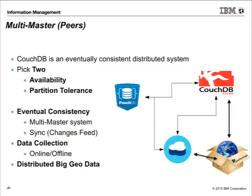The benefit of eventually consistent systems is a multi-master architecture. You don't have a single point of write or a master-slave architecture — you have multi-master. The way you synchronize that data is with a sequence called the changes feed. I retrieve an ID and a revision for every feature in my database, compare that to my local copy, and if I differ, I raise my hand. Because it's multi-master, I can enable data collection to be both online and offline. I'm a field worker — I go out, collect data as a master, then sync with the server which is also a master.